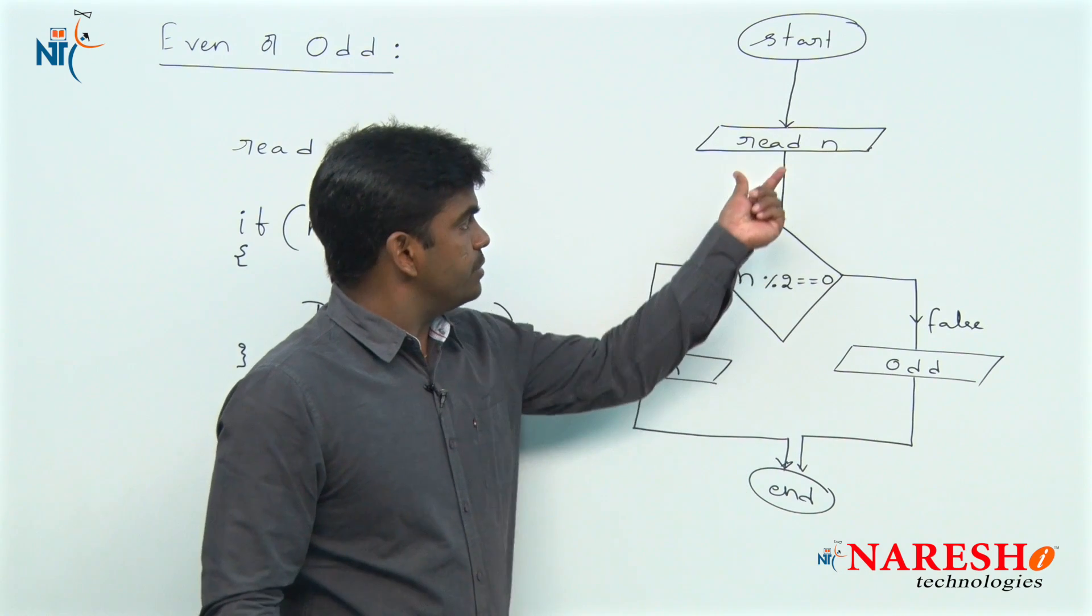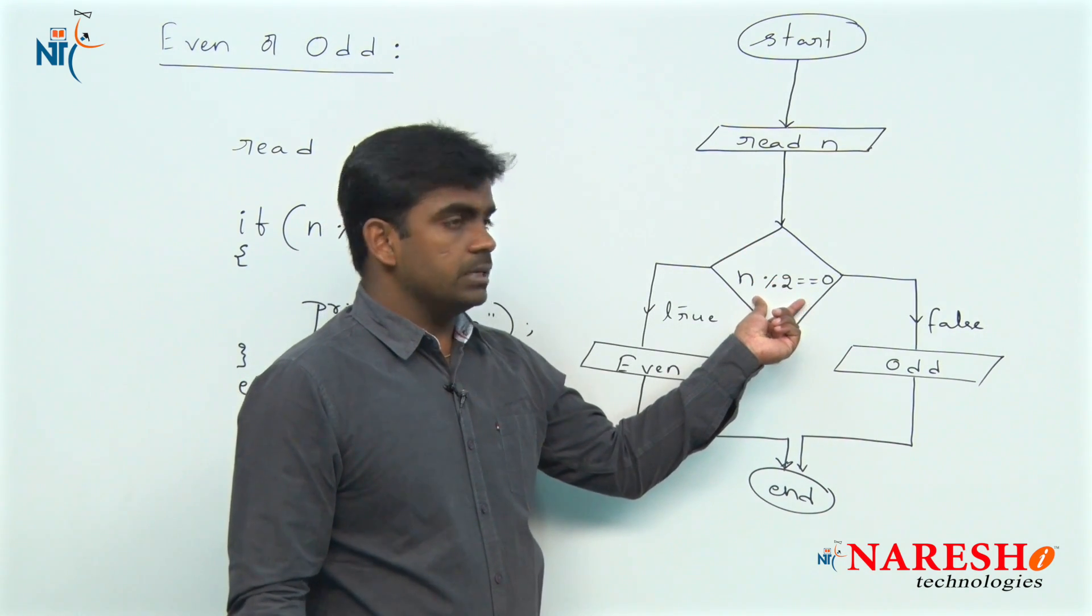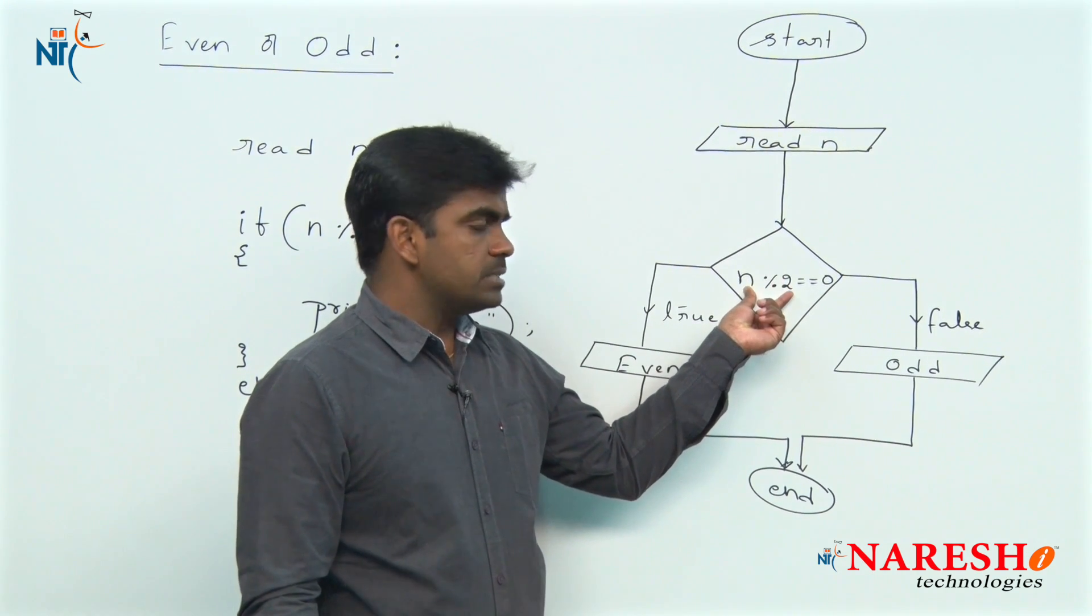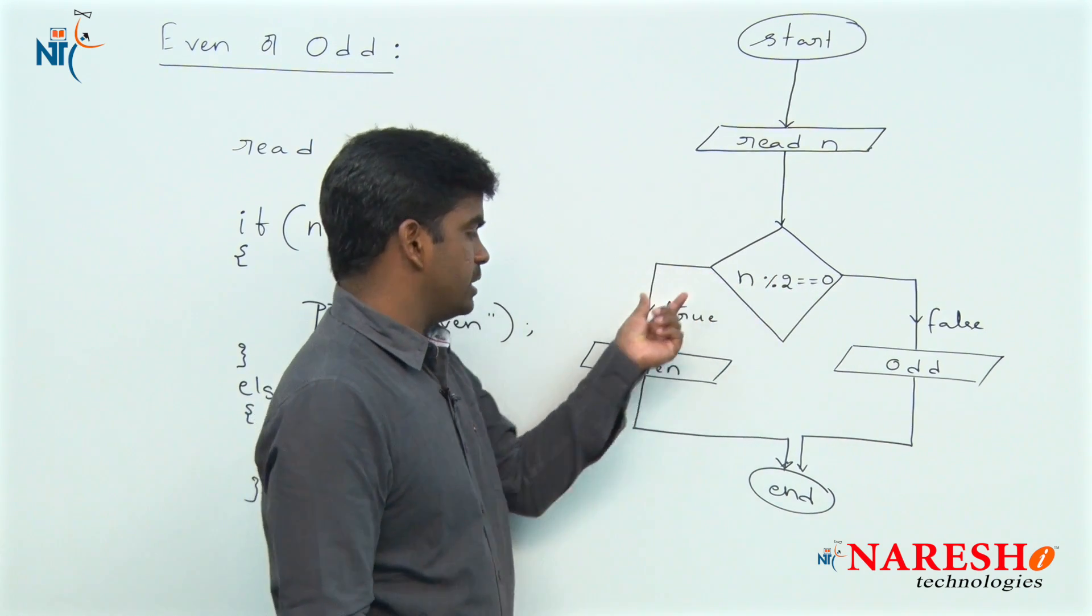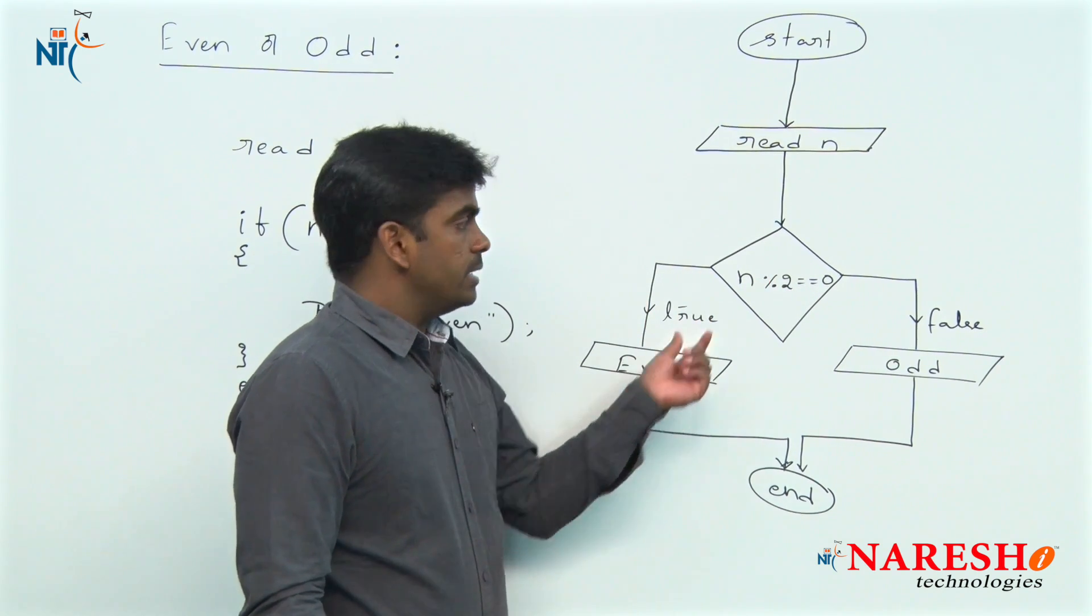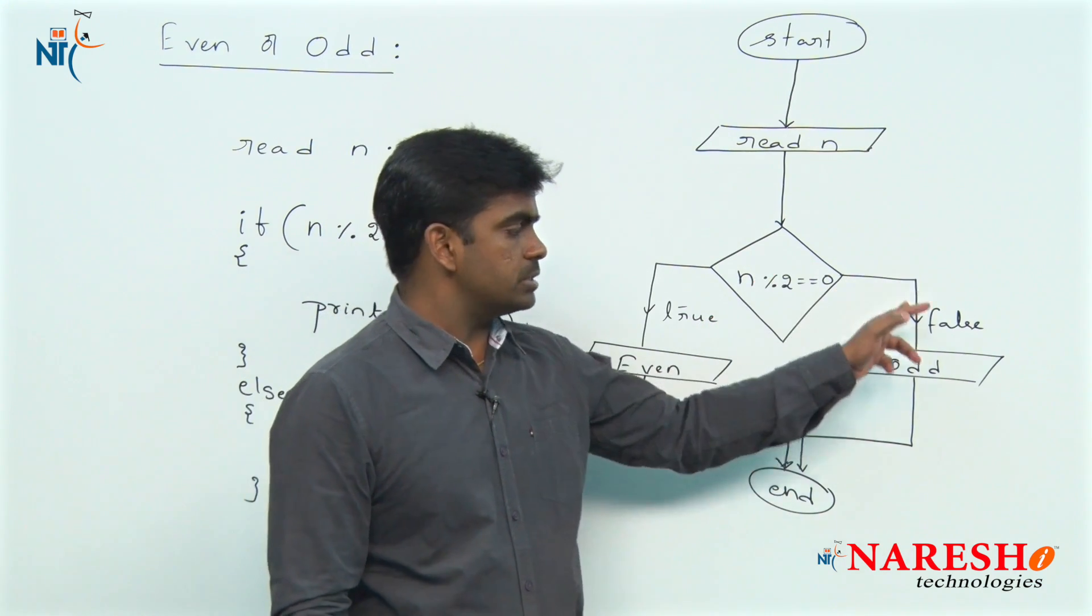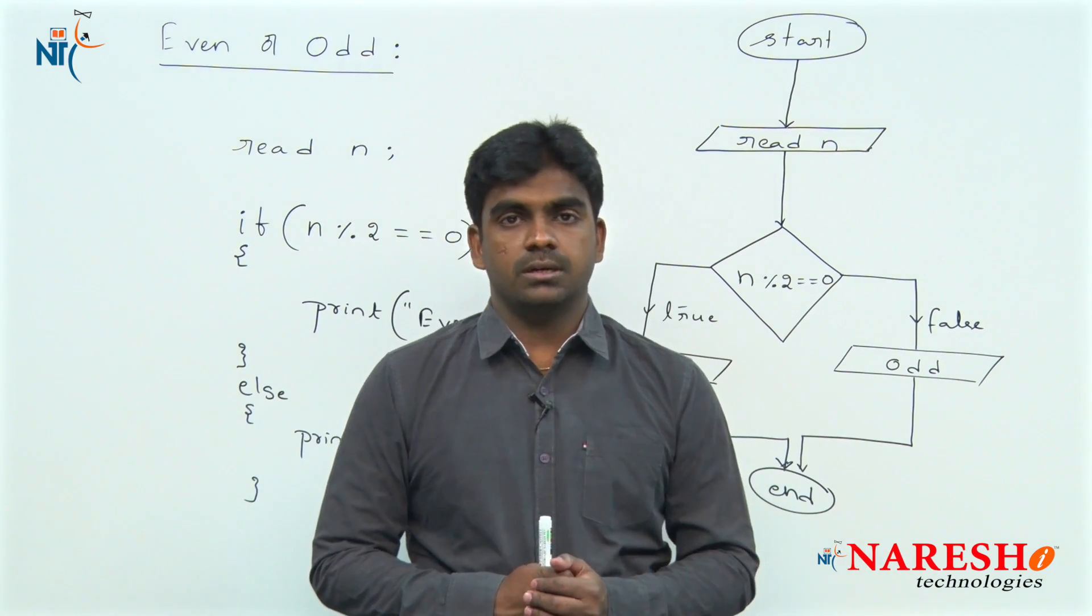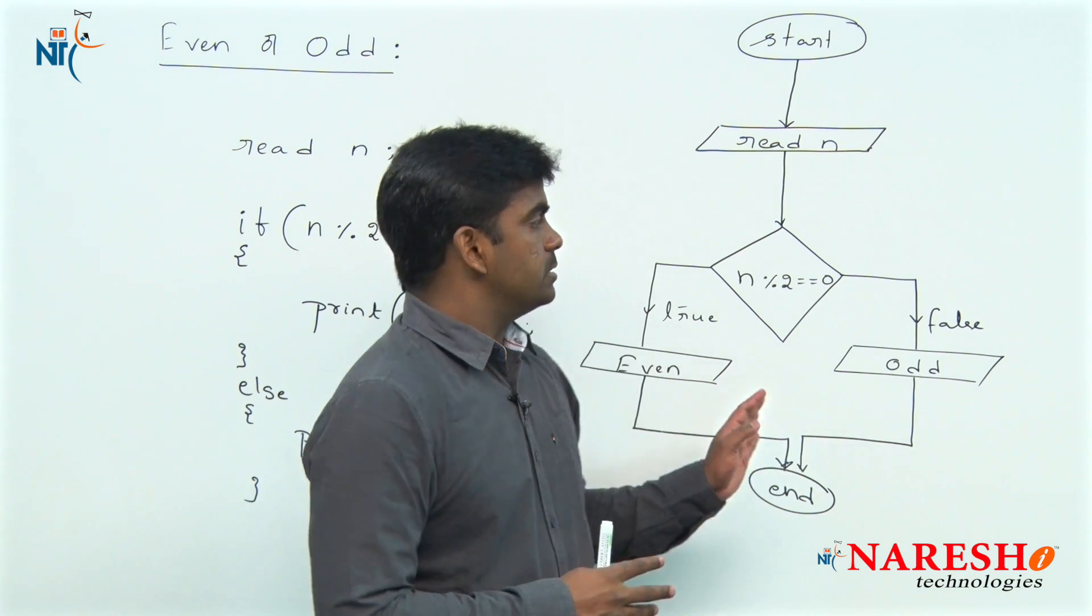First we have to read the n value and next we need to check the condition, whether it is even or odd. If this condition satisfies, if it is divisible by 2, if remainder equals to 0, we can say it is even. For example, 5 mod 2 equals 0, condition false. In a false case it is an odd number. This is the simple logic of finding even number and this is the flow.